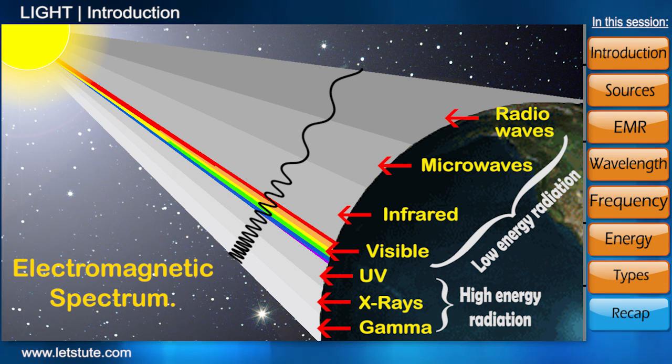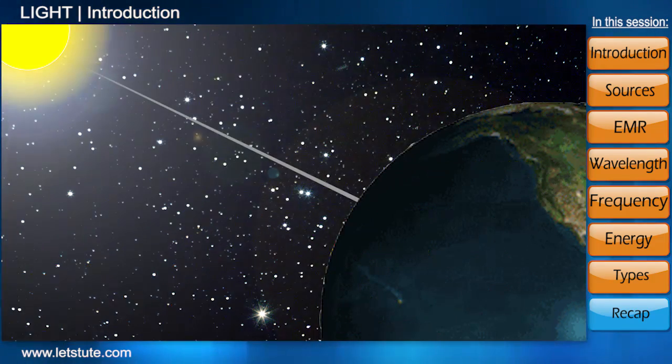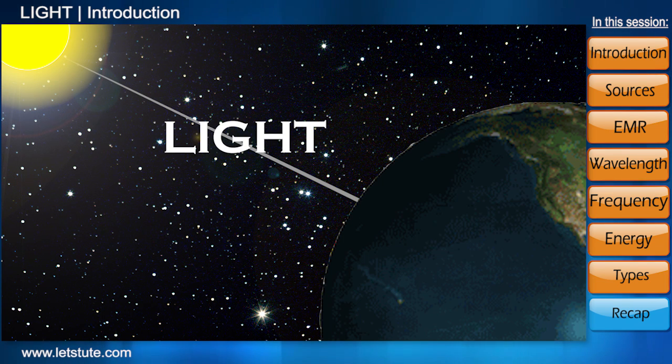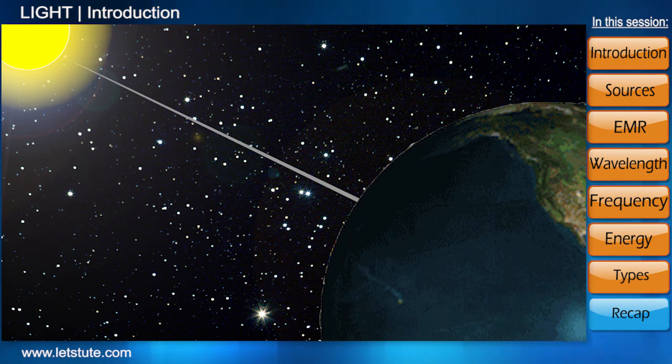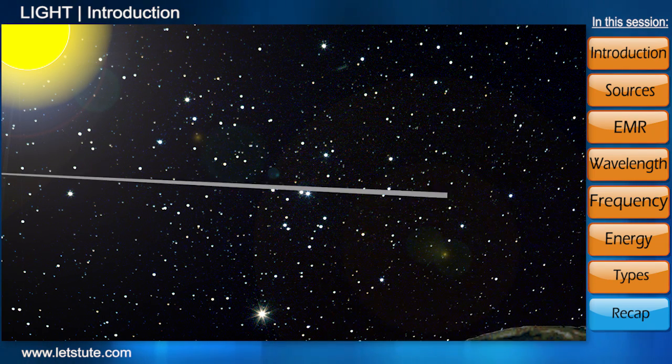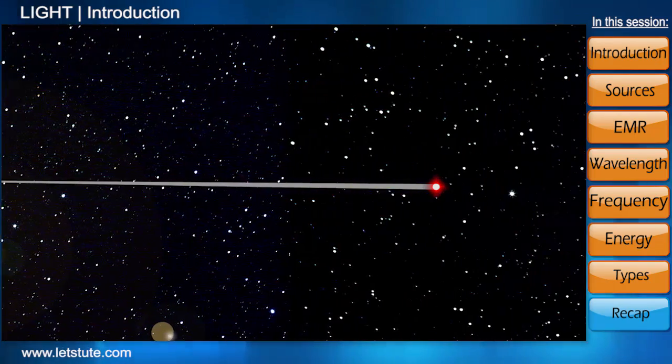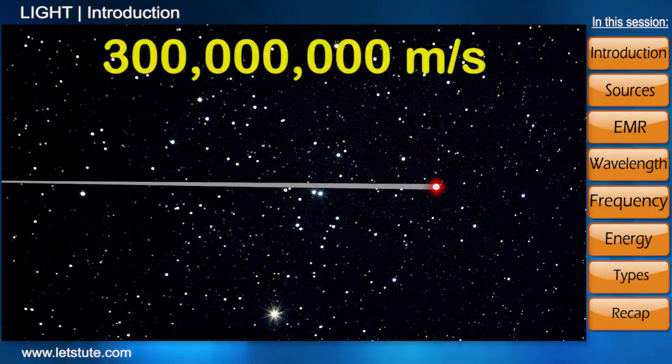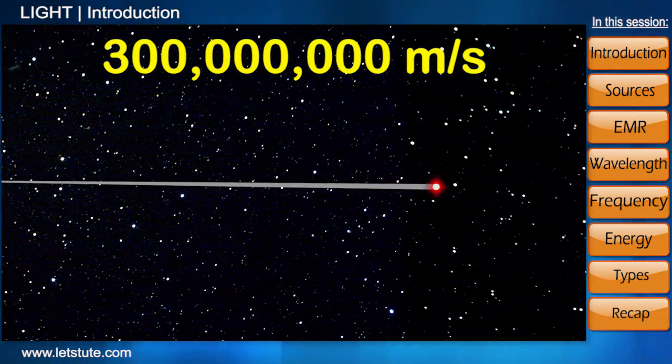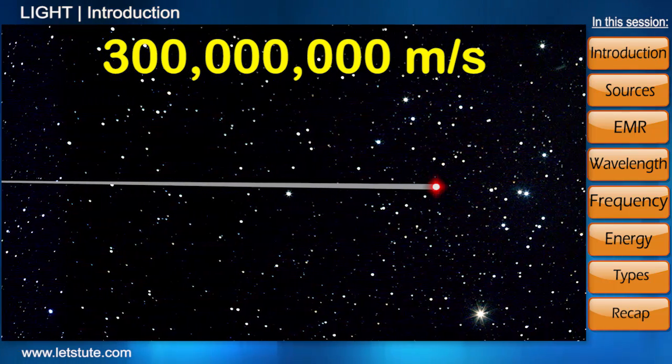So far, we've discussed how all these types of radiations differ from one another. But as they are all part of one big family, they have something in common too. Despite differences in their wavelength, frequency and energy, they all travel with the same speed, approximately 300 million meters per second, the fastest known speed in the universe.